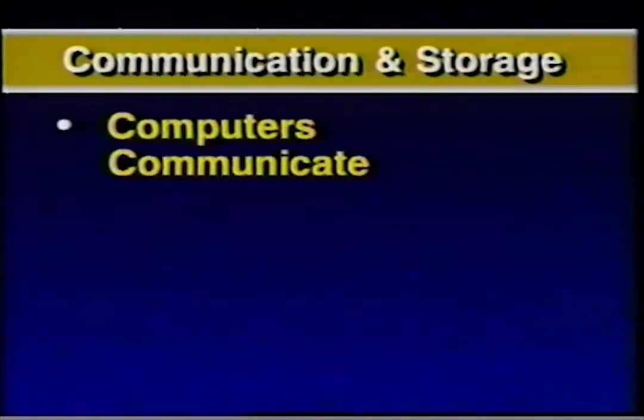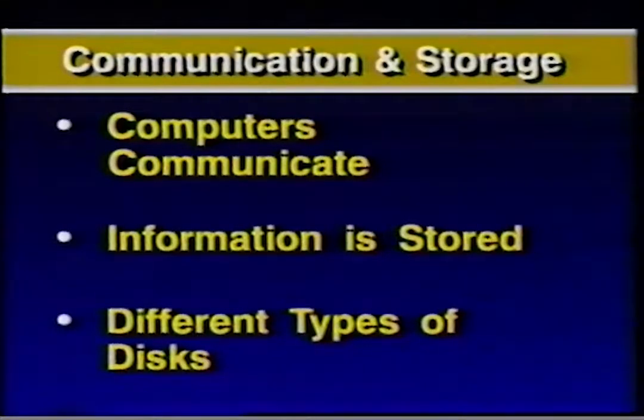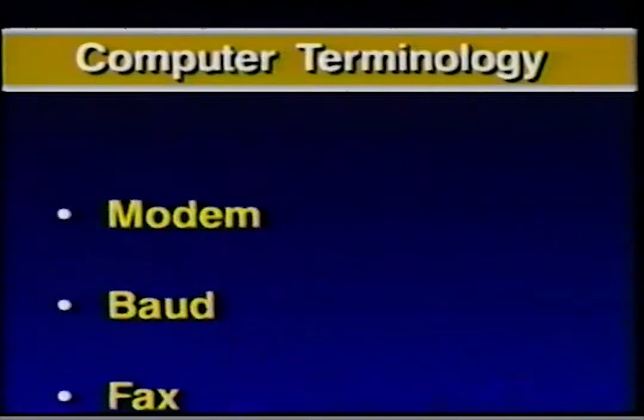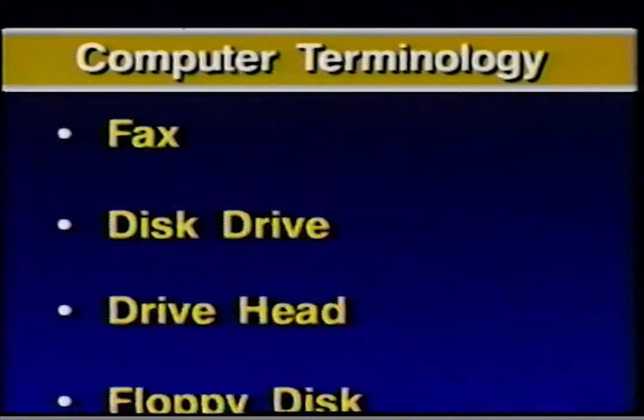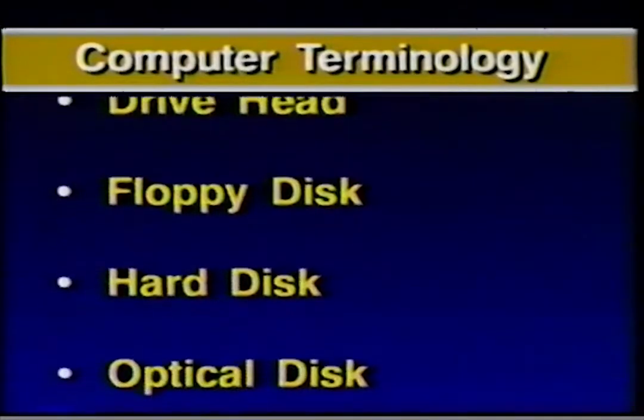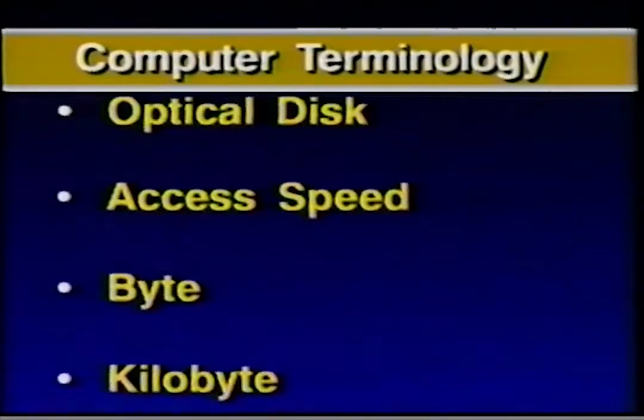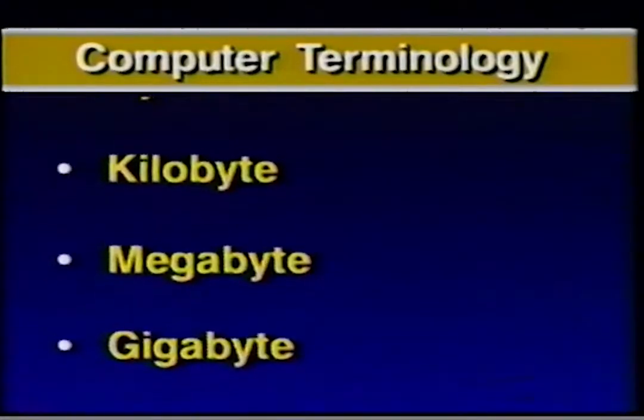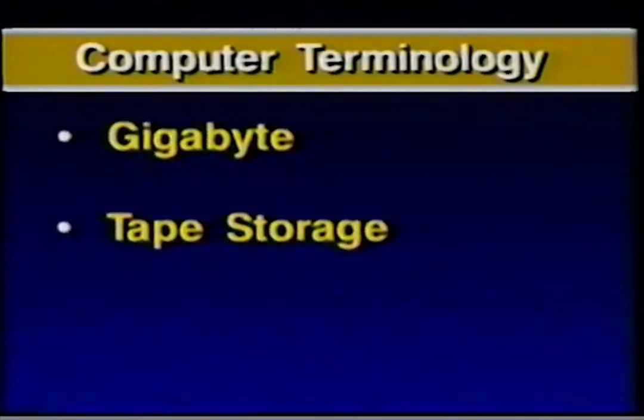In lesson three, communication and storage devices, you will learn how computers can communicate, how information is stored, and what the different types of disks are. We mentioned that some devices can be used both for input and output — called I/O devices — and most are used for communications and storage. We will start with two input-output devices used for communications: modems and faxes.